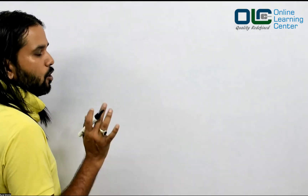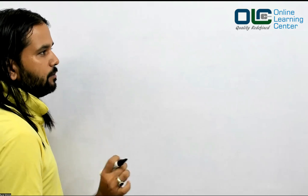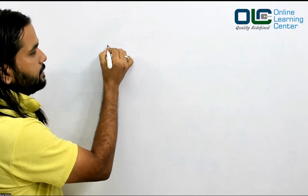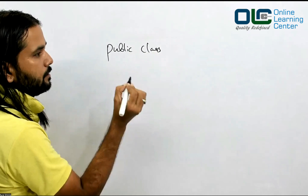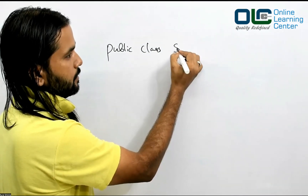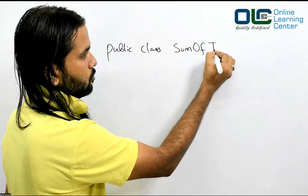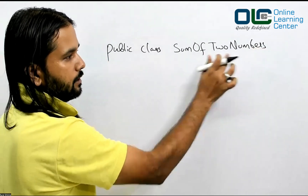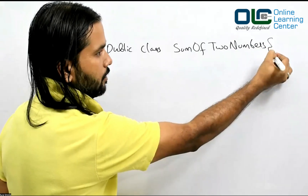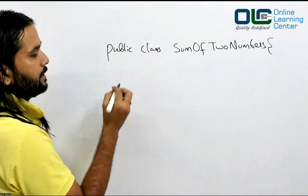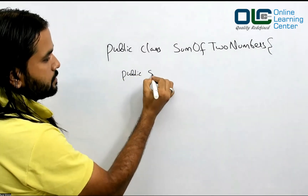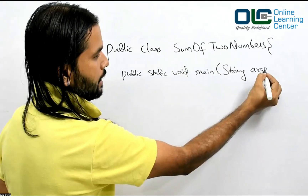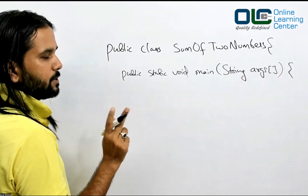The objective of today's program is to add two numbers. For the class, I'll write: public class SumOfTwoNumbers — following the naming convention. Then I'll open curly braces and write the main method: public static void main String args, and open another curly brace. The objective is to add two numbers.